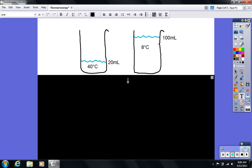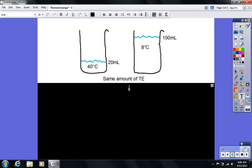So you should have gotten that they both have the same amount of thermal energy. Because Beaker B has five times as much water as Beaker A. But Beaker A's temperature is five times what Beaker B's is. And so they have the same amount of thermal energy. Go back to the money example.